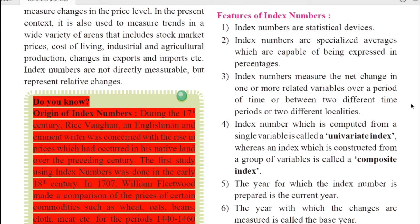Index number works on comparisons. What it does is take a base year and also take into consideration the current year. The current year is the year for which the calculation is being done, and the base year is the year by which the comparisons are to be done. So index numbers measure the net change over a period of time or between two different time periods — there is a comparative study being done. Moving to the fourth feature: an index number computed from a single variable is called a univariate index, whereas an index constructed from a group of variables is called a composite index. Remember: single variable = univariate; group of variables = composite index.